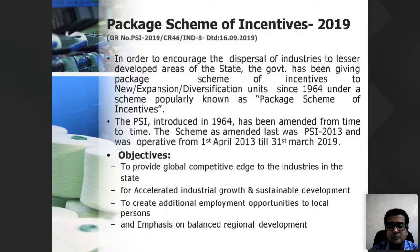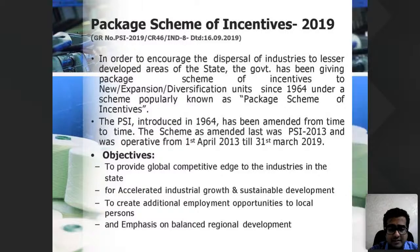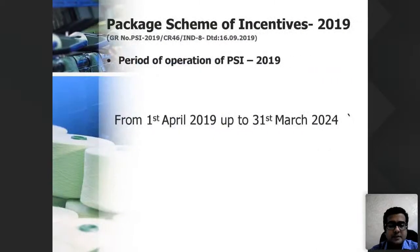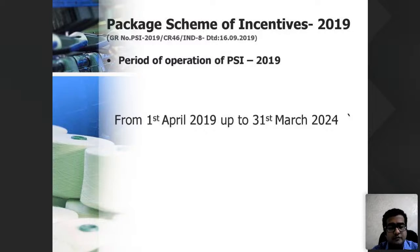The objectives of the Package Scheme of Incentives are to give a global edge to industries in the state, accelerate industrial growth, sustain development, create additional opportunities, increase exports, and emphasize balanced regional development. The PSI 2019 is applicable from 1st April 2019 to 31st March 2024. Any new unit or expansion unit set up within this period will be covered under the scheme.